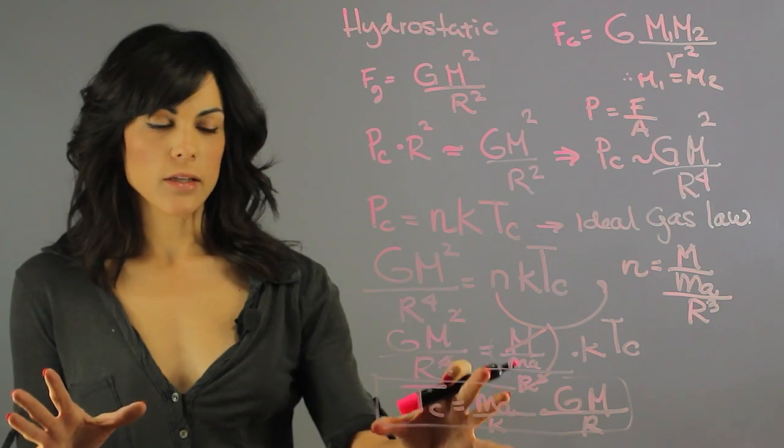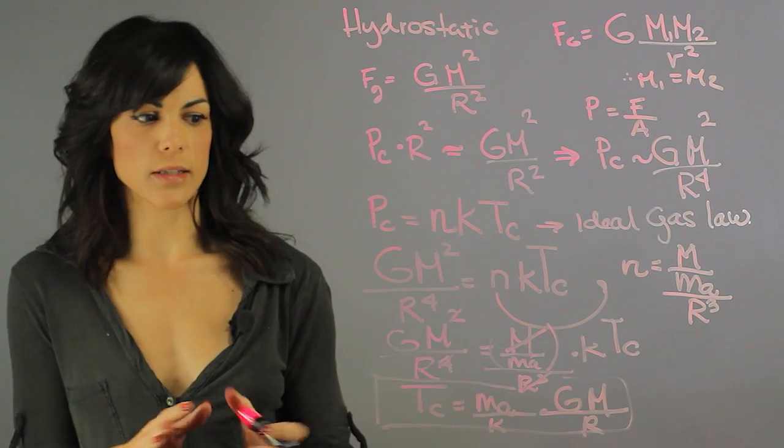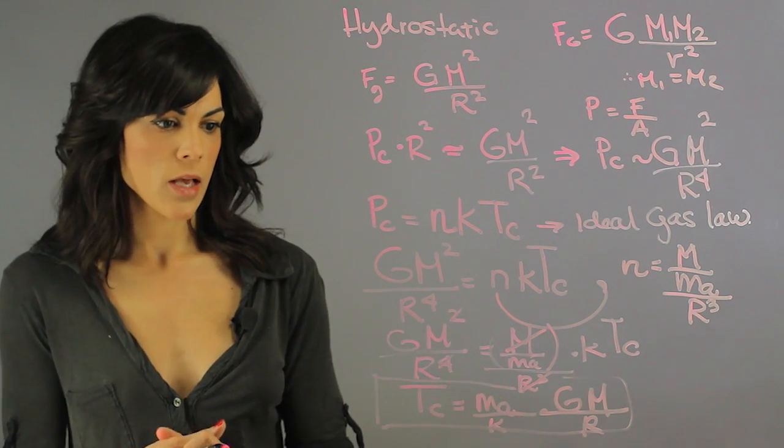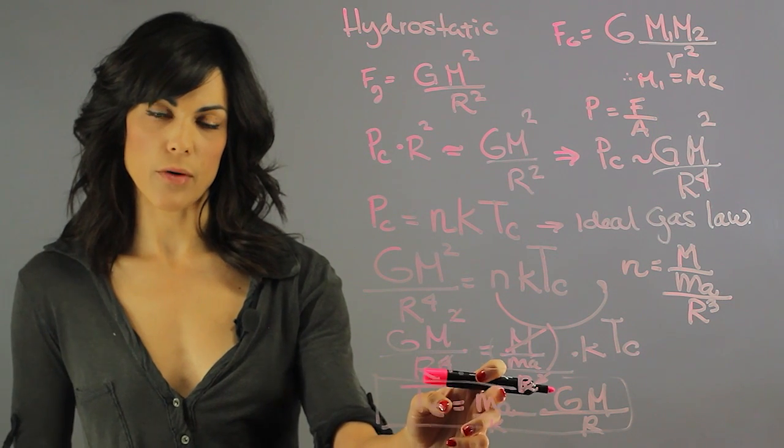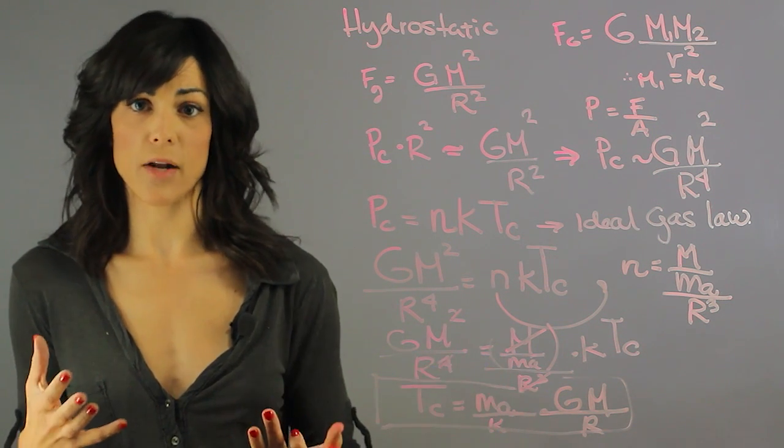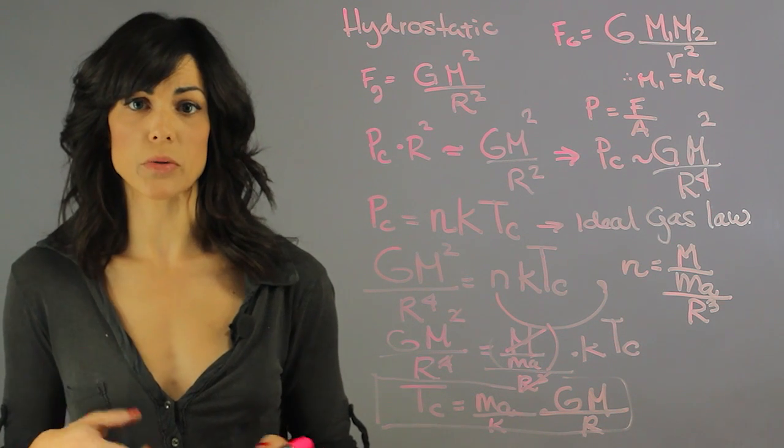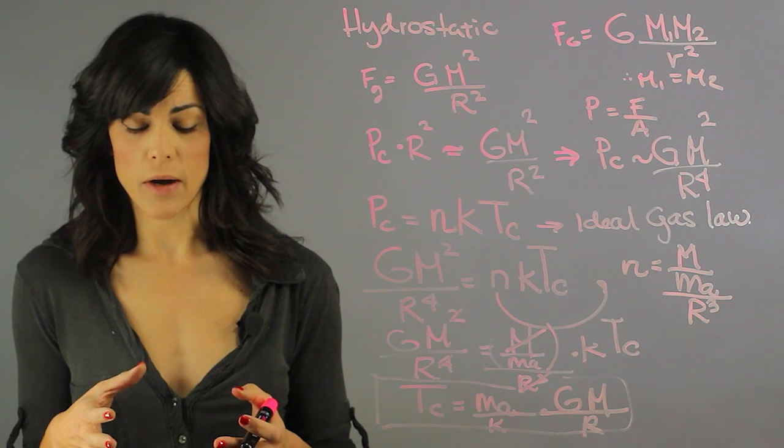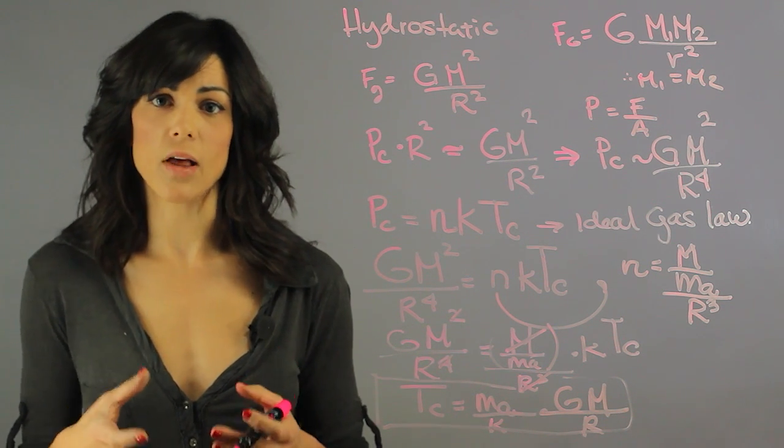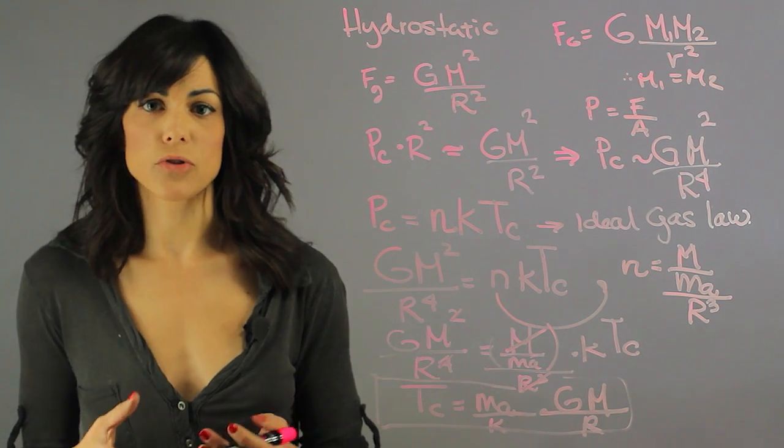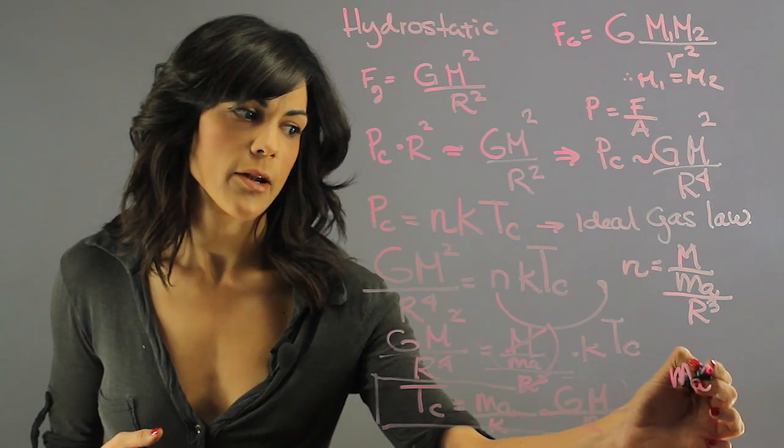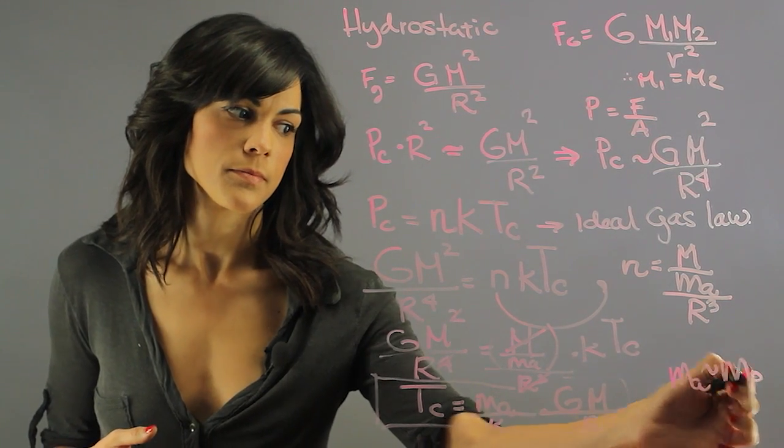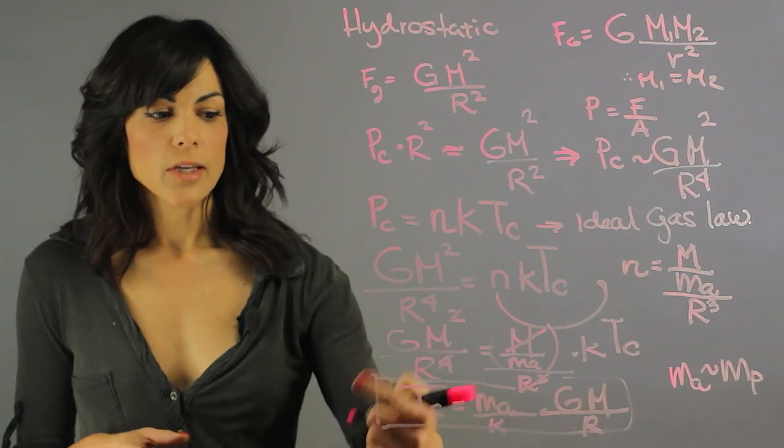If you plug in the numbers for the constants, and I want to do this, I'm kind of out of space, you can plug in the mass of the protons for the mass of a standard atom. It's mostly made out of hydrogen, so it has a single proton. Also, the proton is a lot heavier than the electron, so you can estimate the mass, the typical mass of an atom as the mass of the proton.